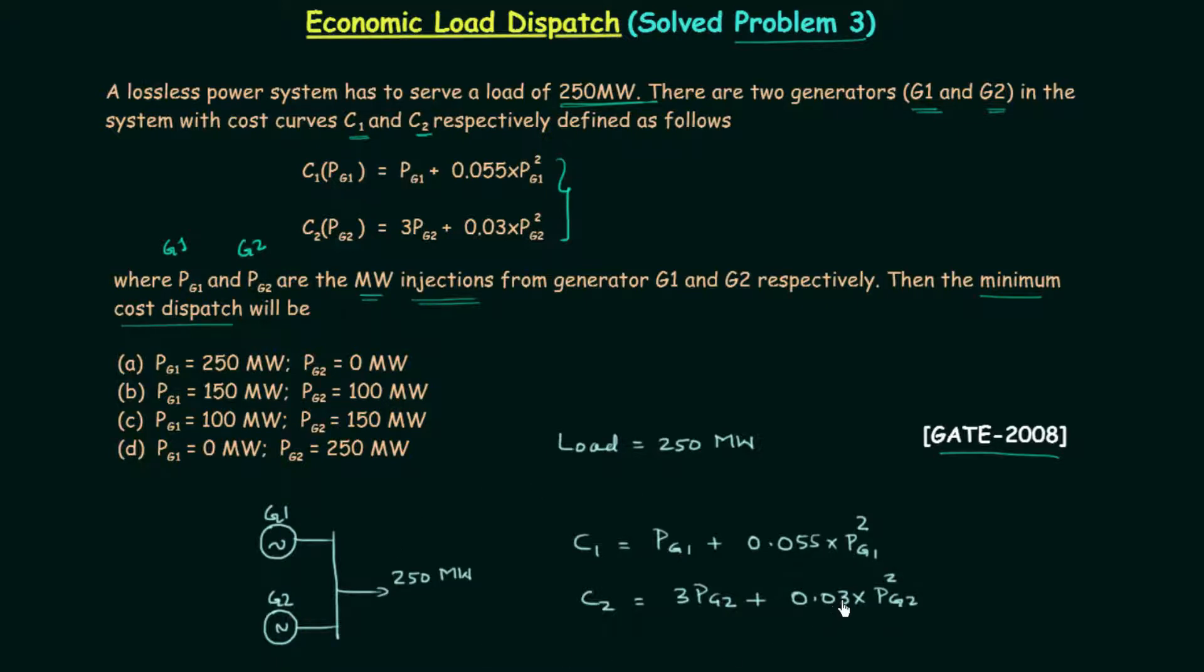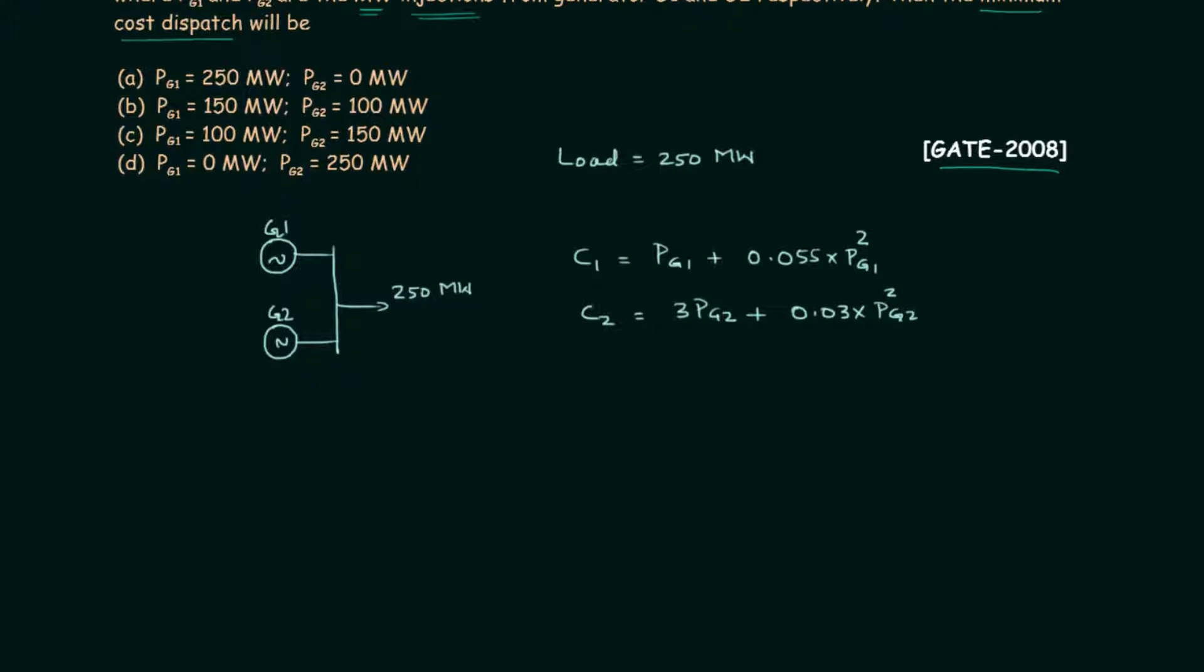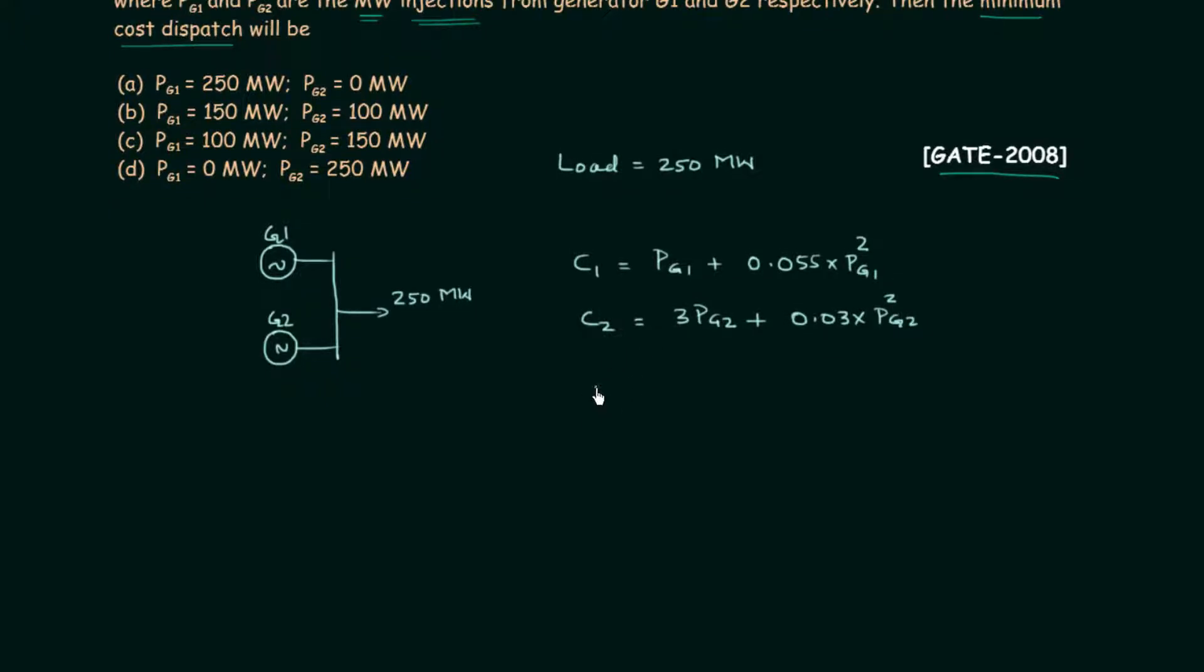This information is given in the problem and I will quickly differentiate C1 with respect to PG1 and C2 with respect to PG2. Differentiating C1 with respect to PG1 will give us 1 plus 0.11 times PG1, and if we differentiate C2 with respect to PG2, it will give us 3 plus 0.06 times PG2. This is what we have after differentiation.